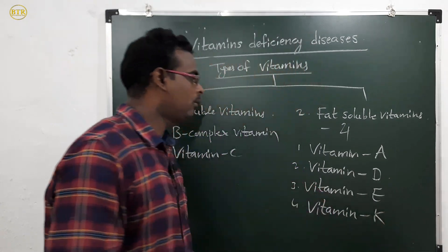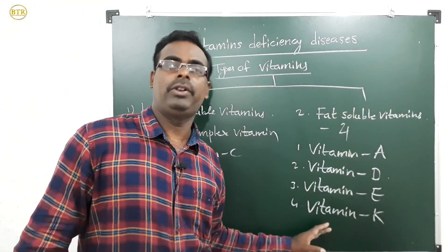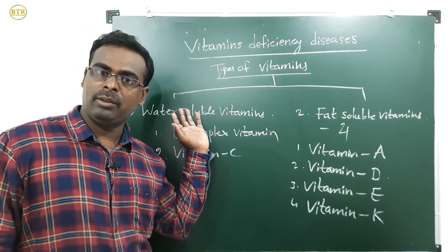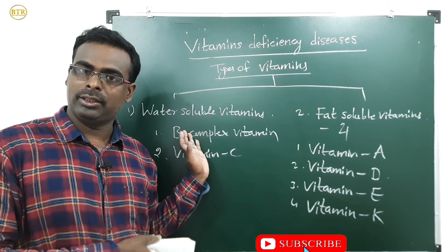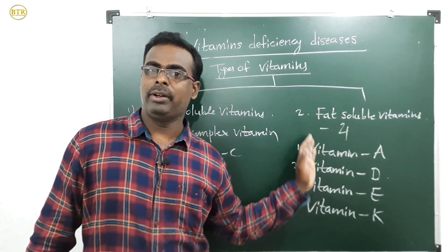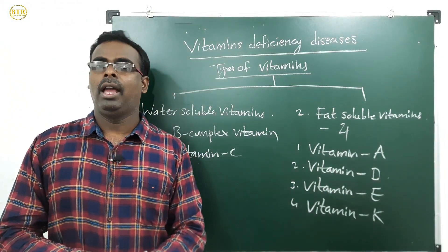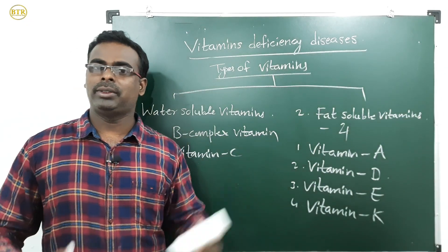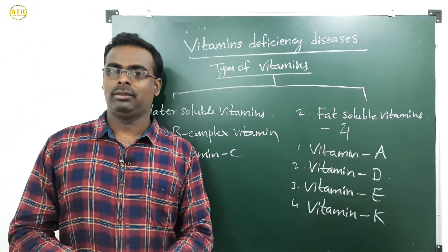Vitamin A, D, E, and K are the four fat-soluble vitamins. So there are two types of vitamins — water-soluble (B complex and vitamin C) and fat-soluble (A, D, E, K). We will now study the scientific names, food sources, deficiency diseases, and symptoms of each vitamin.